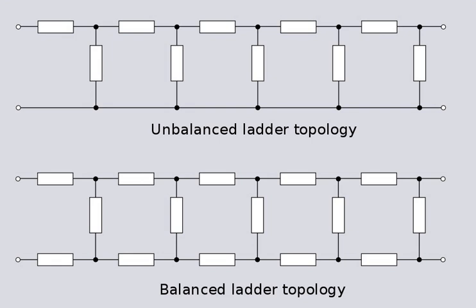The topology of an electronic circuit is the form taken by the network of interconnections of the circuit components. Different specific values or ratings of the components are regarded as being the same topology. Topology is not concerned with the physical layout of components in a circuit, nor with their positions on a circuit diagram. It is only concerned with what connections exist between the components. There may be numerous physical layouts and circuit diagrams that all amount to the same topology.